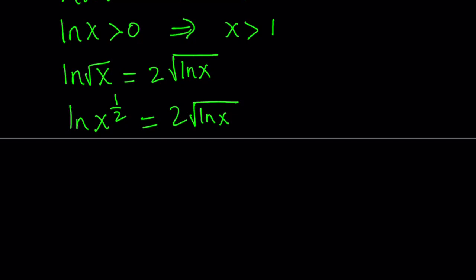And then, this 1 half can be moved to the front, since it's a power, and we have the log in front of it. So we can write this as 1 half multiplied by ln x equals 2 times square root of ln x.